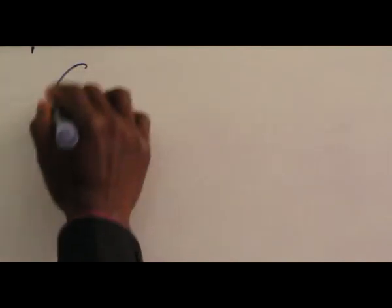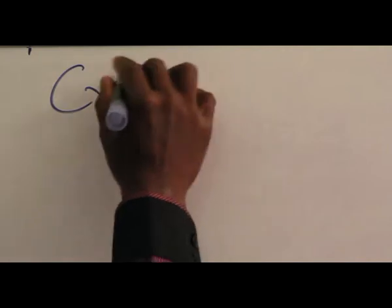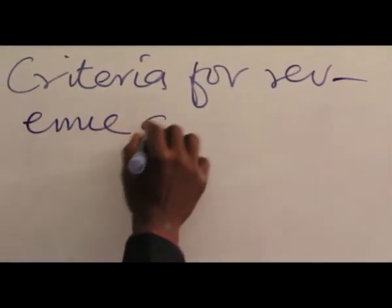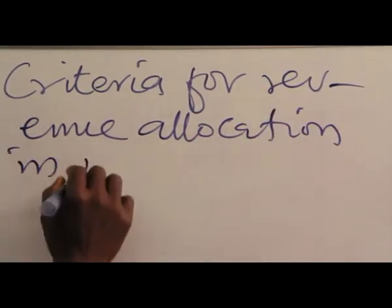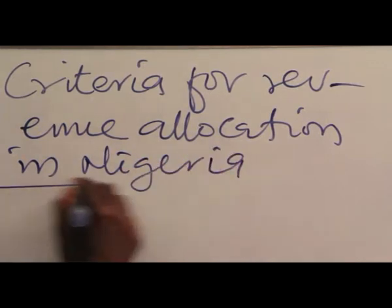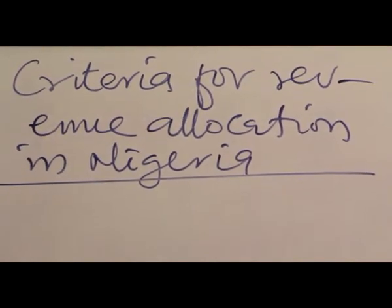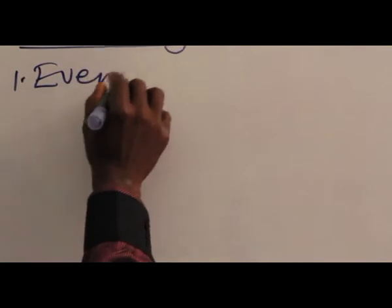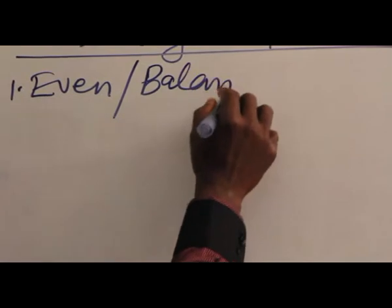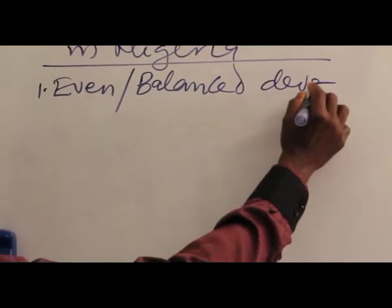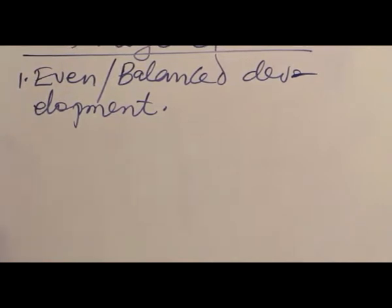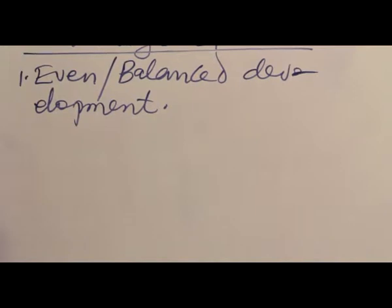What are the criteria for revenue allocation in Nigeria? One, even through balanced development. This criterion is based on equal development of every part of the country.